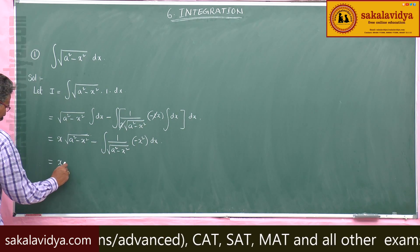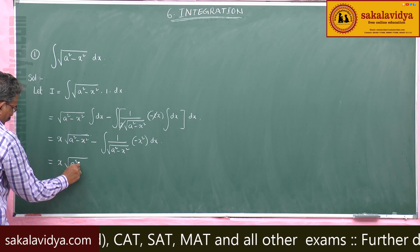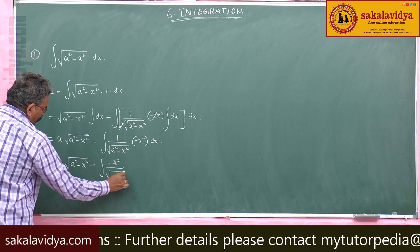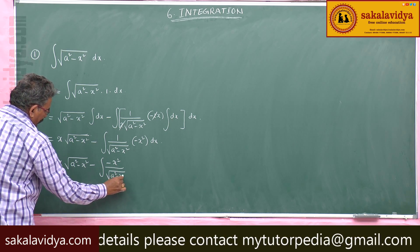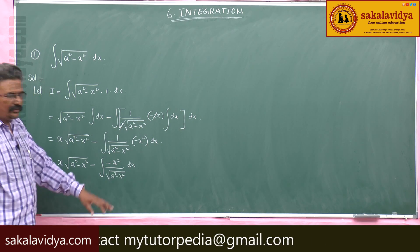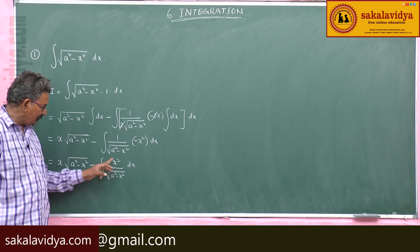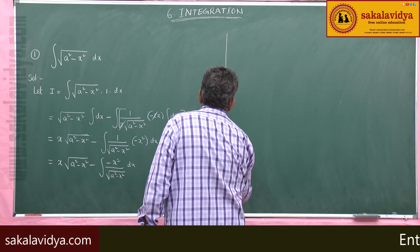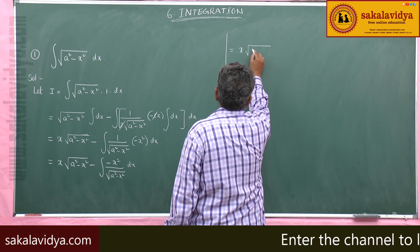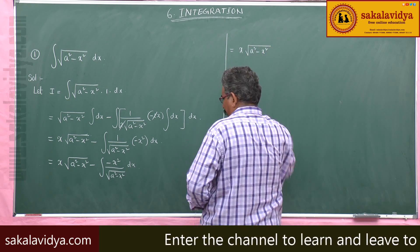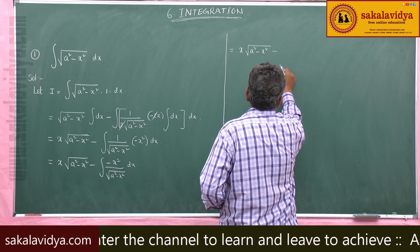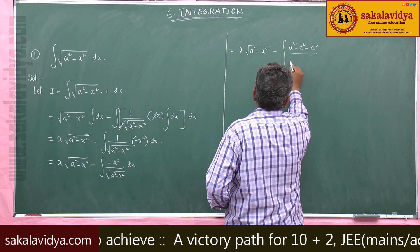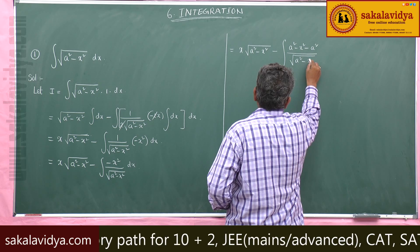Now, add and subtract a² inside the numerator. So we can write: x·√(a²−x²) minus ∫(a²−x²−a²+x²)/√(a²−x²) dx, which becomes x·√(a²−x²) minus ∫(a²−x²)/√(a²−x²) dx.